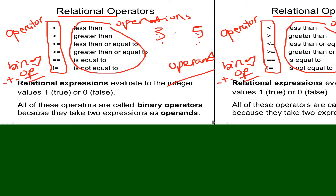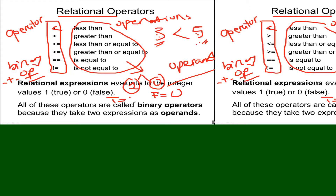For example, the less-than operator relates whether the left side is less than the right side. The result of these relational operators is always either true or false. In C, false always means zero. True means any number other than zero — so five is true, minus five is true, minus 5.1 is true, but zero is false.